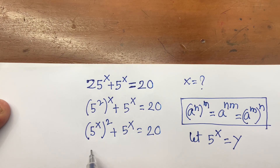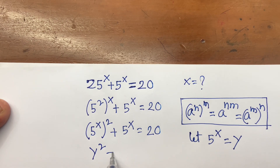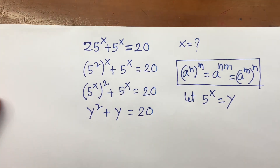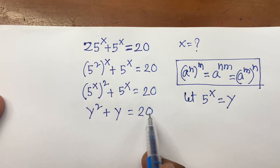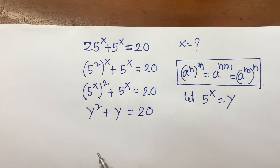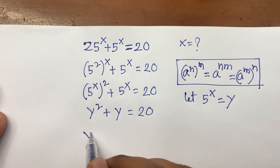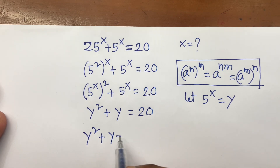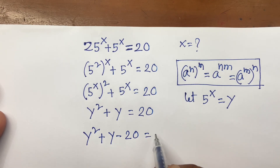Now I can write y squared plus y equals 20. Moving 20 to the left side, we get y squared plus y minus 20 equals 0.